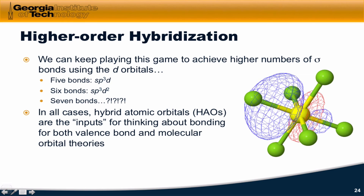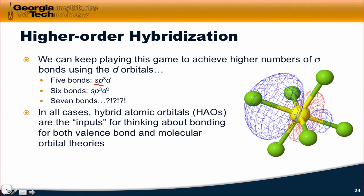We can keep playing this game for larger numbers of sigma bonds using the d orbitals. If we need 5 bonds, we can throw in a d orbital and get SP3d hybridization. For 6 bonds, we can combine 1 s, 3 p's, and 2 d orbitals for a total of 6, generating 6 hybrids — this is SP3d2. We can even go beyond to 7 and 8 bonds, although molecules with that many bonds to a single atom are fairly rare. You'll never see SP3d2 or beyond in general chemistry.